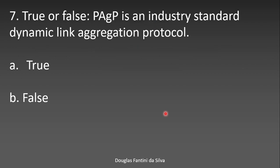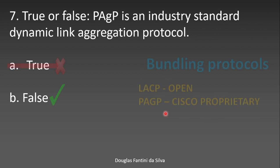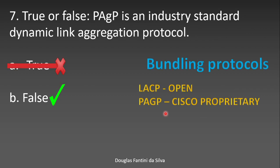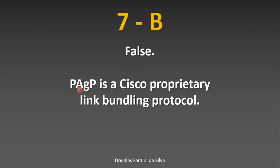Number seven, true or false: PAGP is an industry standard dynamic link aggregation protocol. This is FALSE. PAGP is a Cisco proprietary protocol for link bundling. You have LACP, which is the open standard, and PAGP, which is Cisco proprietary. Both are used for link aggregation or EtherChannel bundles.